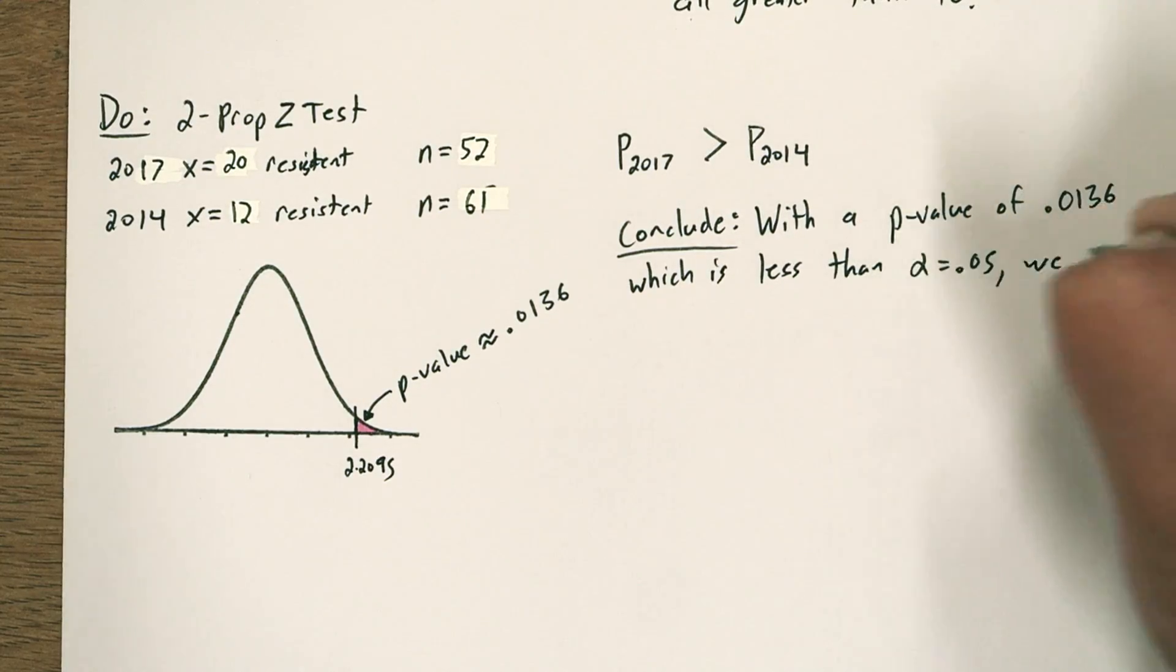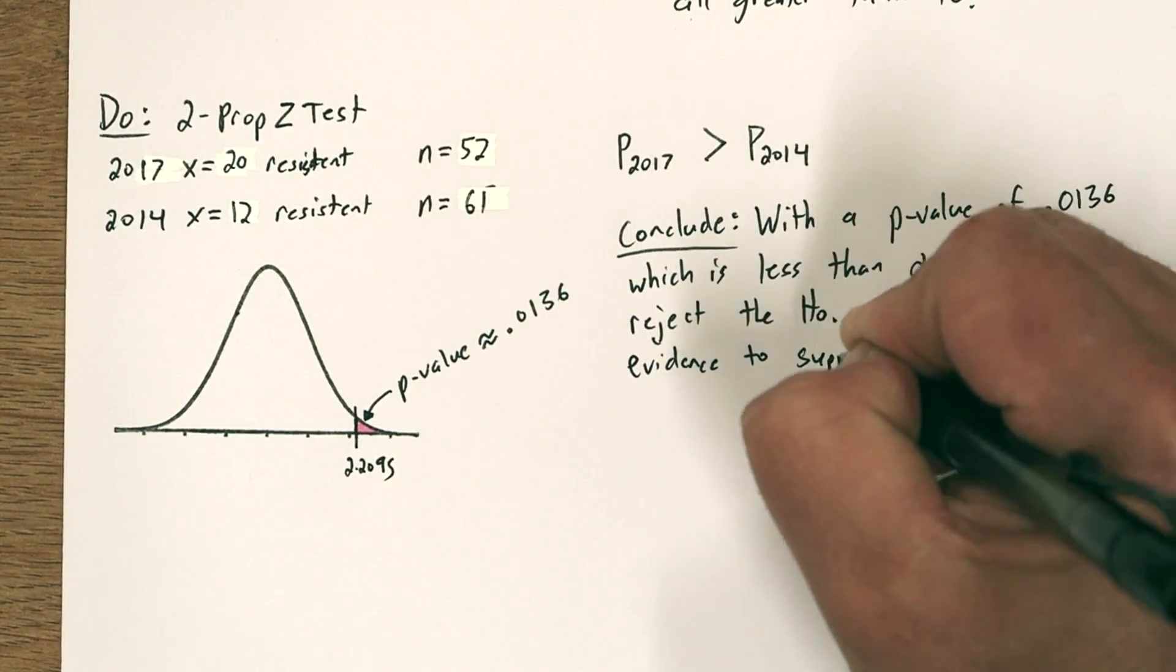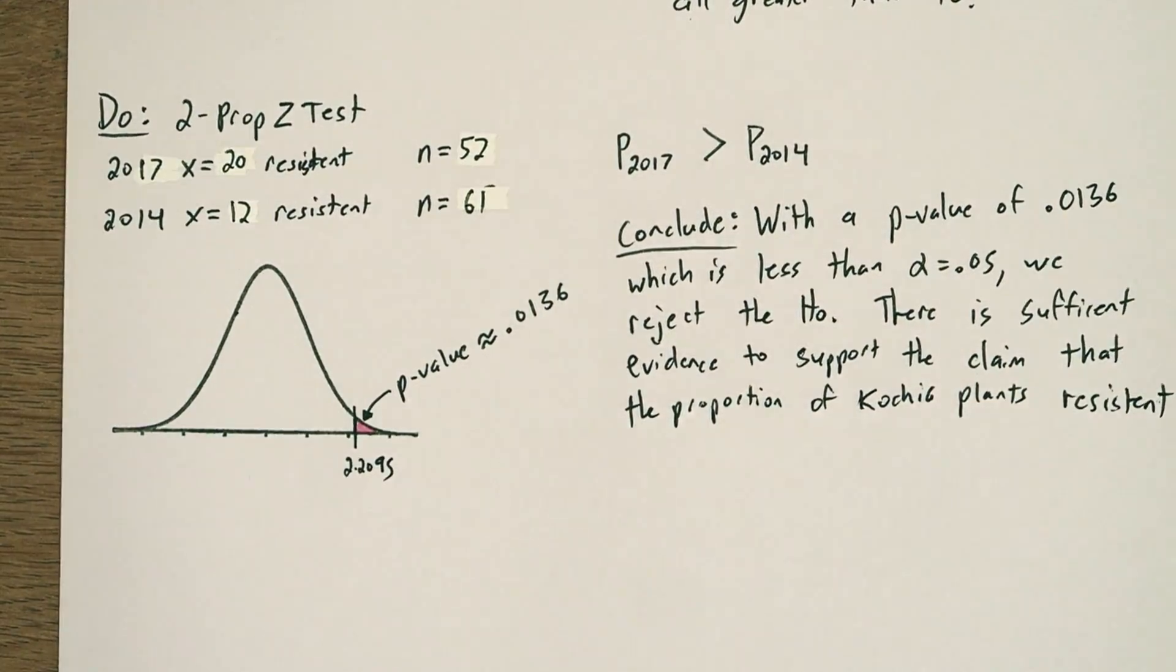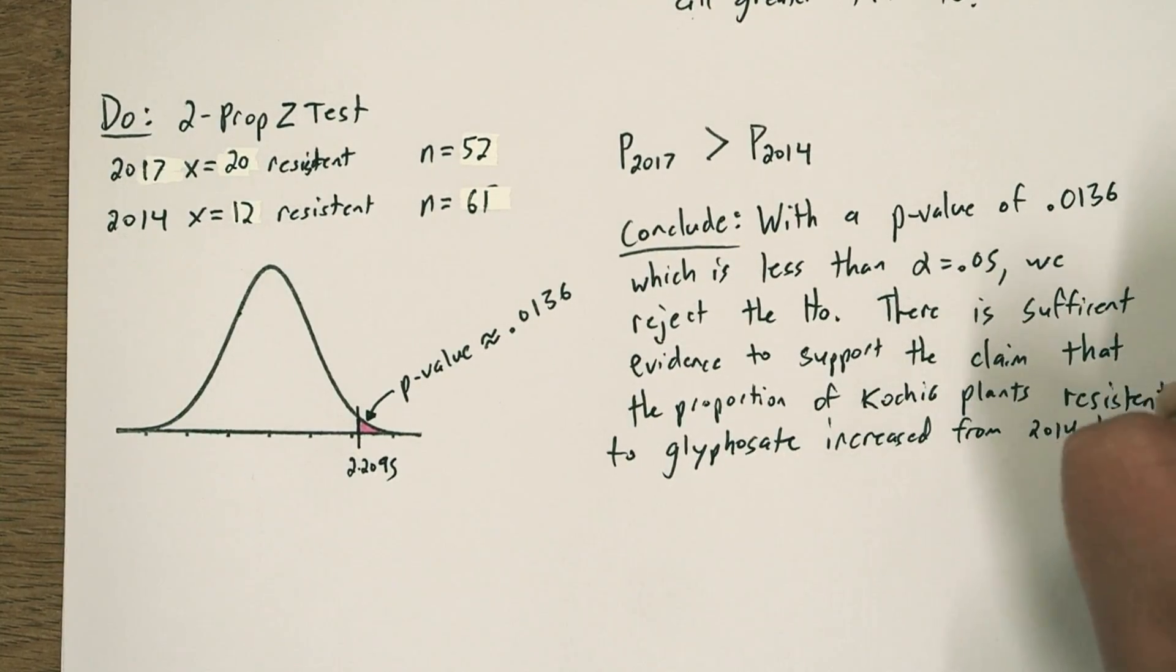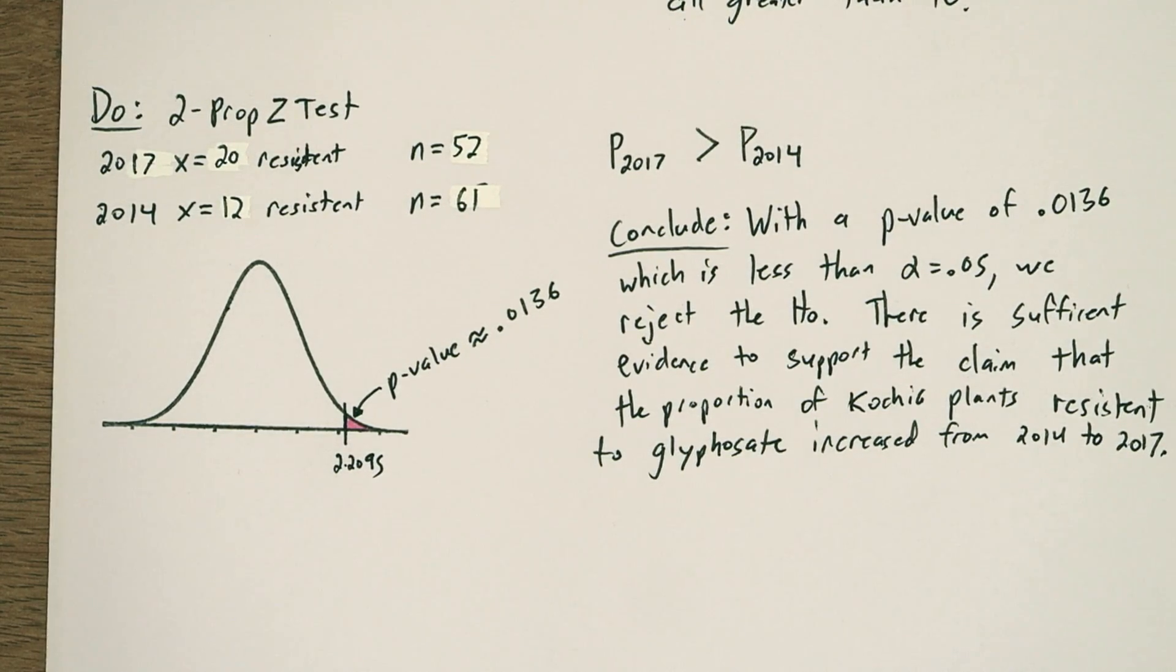Now we're ready to conclude. With a p-value of 0.0136, which is less than alpha equals 0.05, we reject the null hypothesis. There's sufficient evidence to support the claim that the proportion of Cochia plants resistant to glyphosate increased from 2014 to 2017.